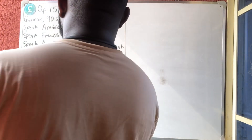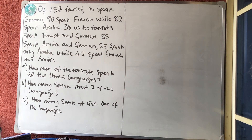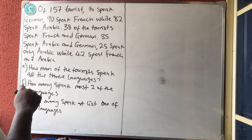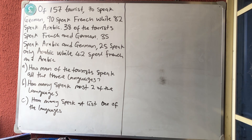Let's solve this simple search problem. Out of 157 tourists, 70 speak German, 90 speak French, while 82 speak Arabic. 38 of the tourists speak French and German, 25 speak Arabic and German, 35 speak Arabic and French, 25 speak only Arabic, while 42 speak French and Arabic.